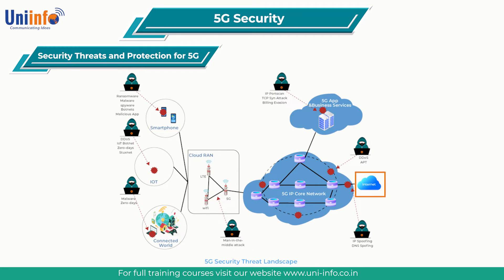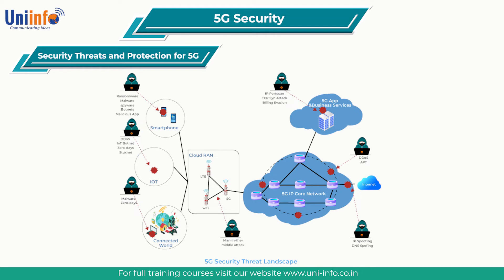The figure also covers the positioning of various threat types within the network, such as smartphone threat types including ransomware, spyware, malware, and bots. An MITM attack would be launched at the cloud-RAN domain, while DDoS may target the IP core network. Every single domain of the 5G network will be under threat in such a landscape.